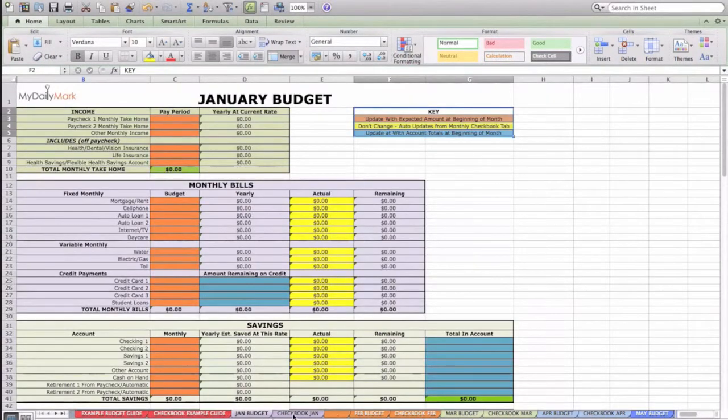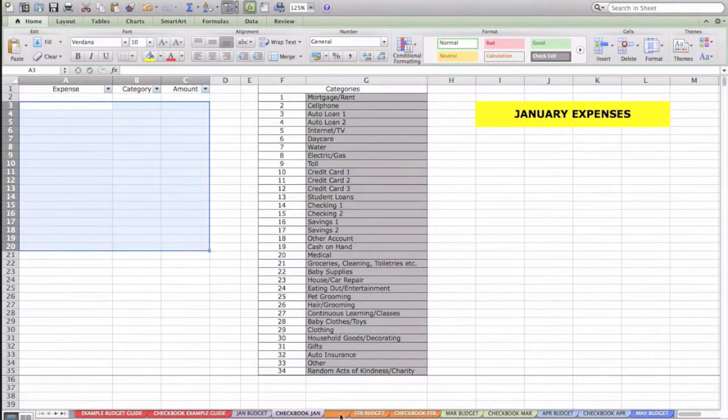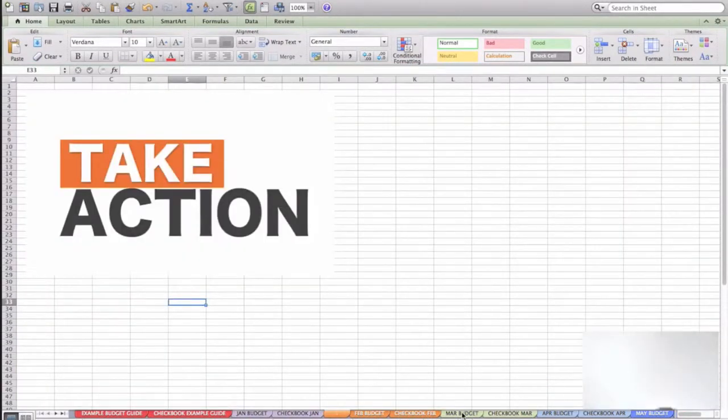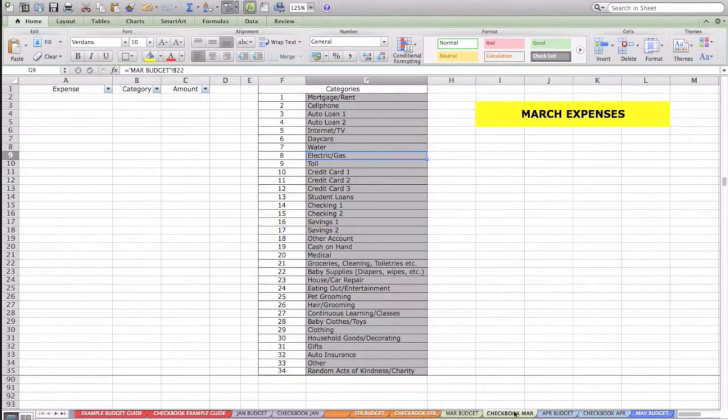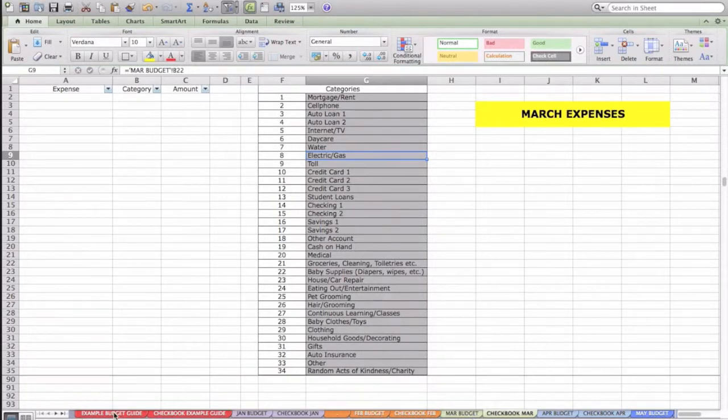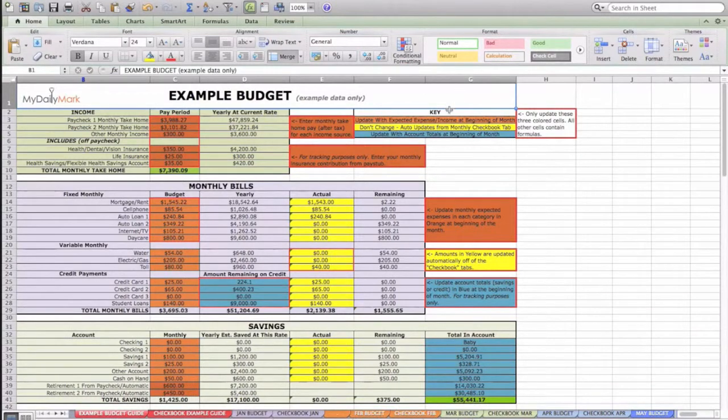Then we have February down here at the bottom, March budget and checkbook, and it goes all the way through the year. So you can track your progress throughout the entire year and come back and reference it later if you need to. Now this example budget looks pretty difficult at first and it is a detailed version, but rest assured there's only a few things you actually have to change. So the key up here shows you the three different colors you really need to pay attention to.